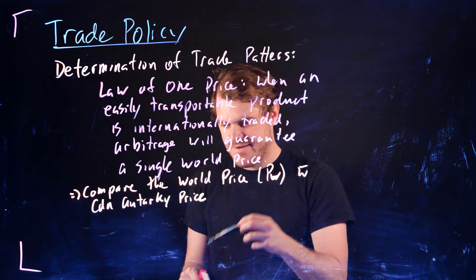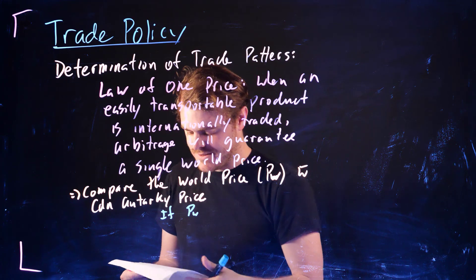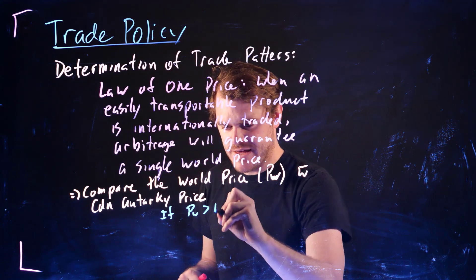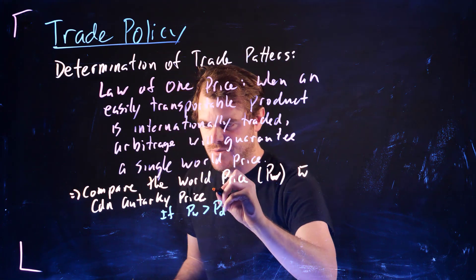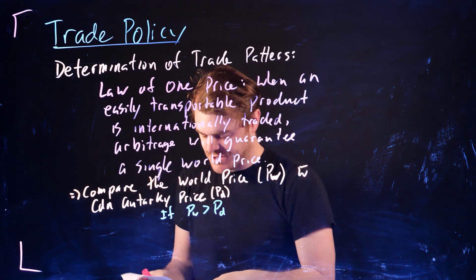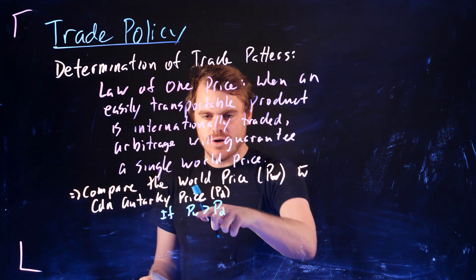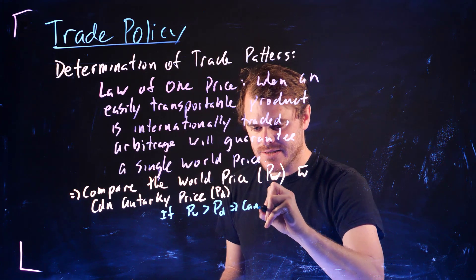And so the rule that we have here is if the world price is greater than this autarchy price—and I should be clear, this autarchy price we're going to be calling PD, subscript D—so if this world price is above this autarchy price, then Canada is going to export this.